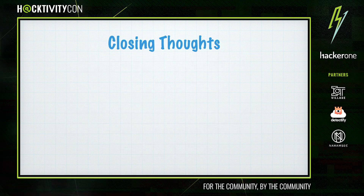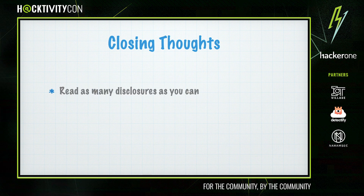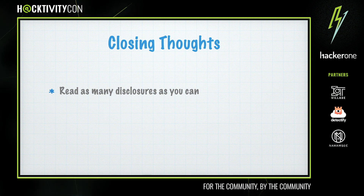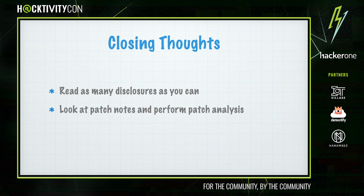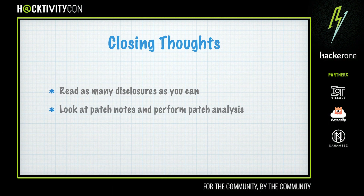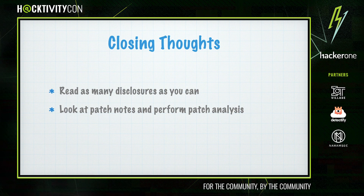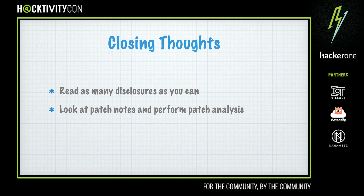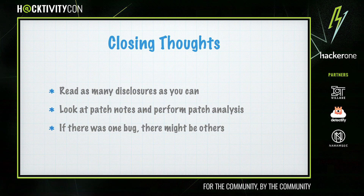So that's been my bug bounty journey and a look at my process. A few things that have really helped me: try to read as many disclosure reports and write-ups as you can — even if it's something you're familiar with, there's often a small technique or trick that could be helpful. If you're working on a program that has patch notes, make sure to go through them to see what the most recent issues have been — either look at commit logs or do patch analysis to discover the original issue. Finally, it's pretty hard to fix an entire class of vulnerabilities with a single patch, so if a particular type of bug was fixed, there are quite possibly a few more hiding away.